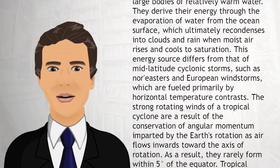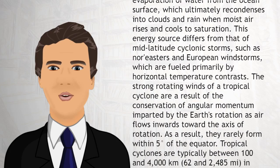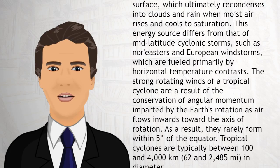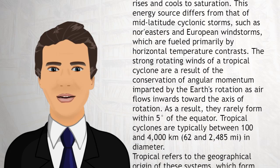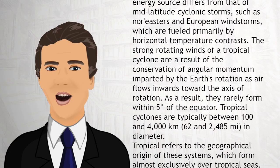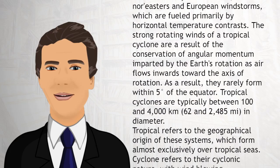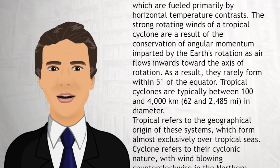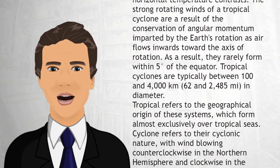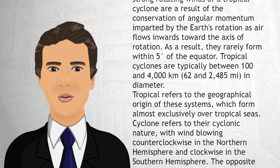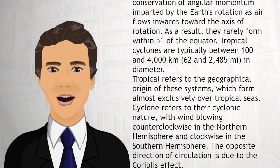The strong rotating winds of a tropical cyclone are a result of the conservation of angular momentum imparted by the Earth's rotation as air flows inwards toward the axis of rotation. As a result, they rarely form within 5 degrees of the equator. Tropical cyclones are typically between 100 and 4,000 kilometers (62 and 2,485 miles) in diameter.